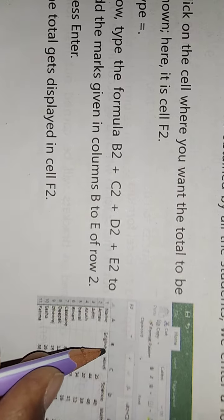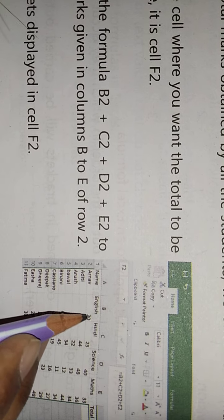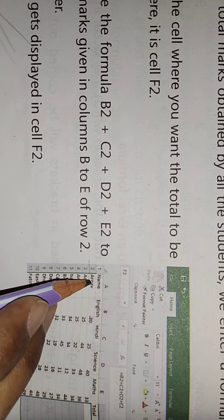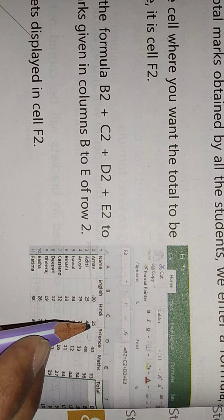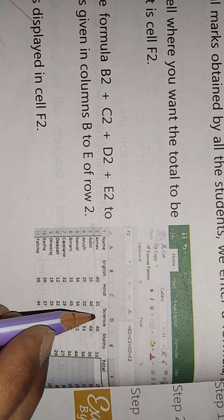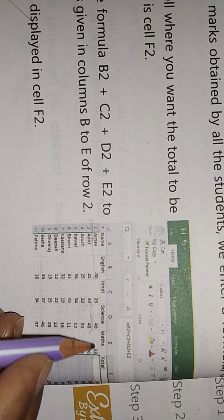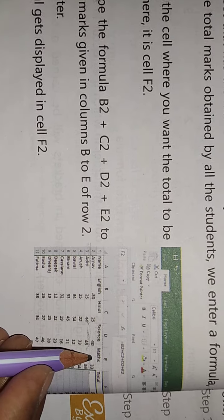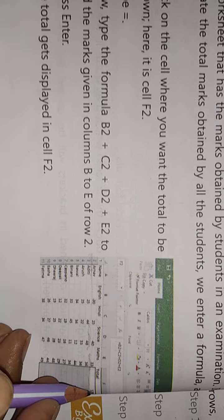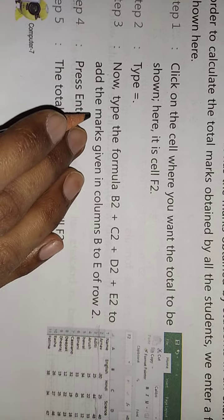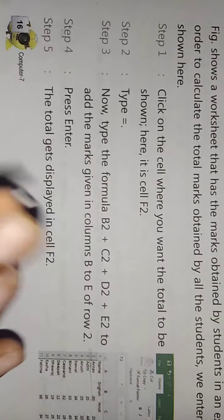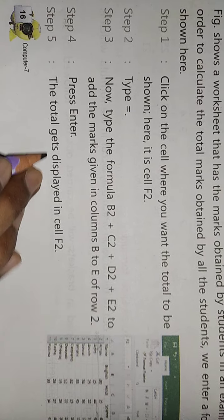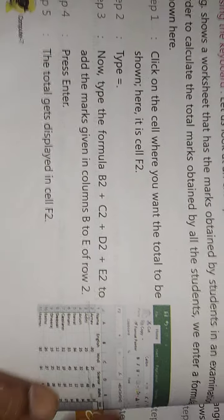The formula is B2 plus C2 plus D2 plus E2. Add the marks given in column B to E of row 2. Then press Enter and the total will display in cell F2.